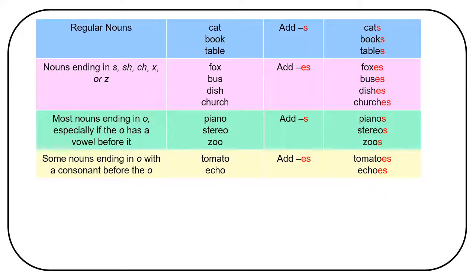Some nouns ending in o with a consonant before the o, like tomato and echo, add es. Tomatoes, echoes.